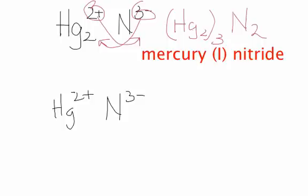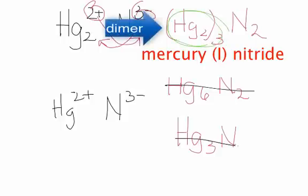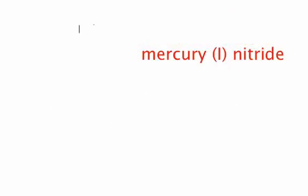The reason why you don't put Hg6N2 or Hg3N, you don't use any of these right here. This is not quite correct, because this is a dimer. This mercury is a dimer. So this 3 right here means that there's three of these Hg2s. So what does that look like?